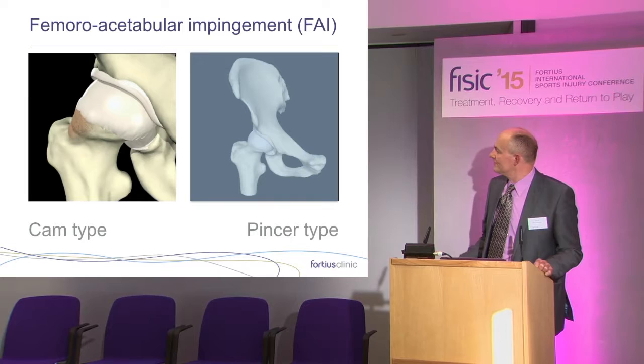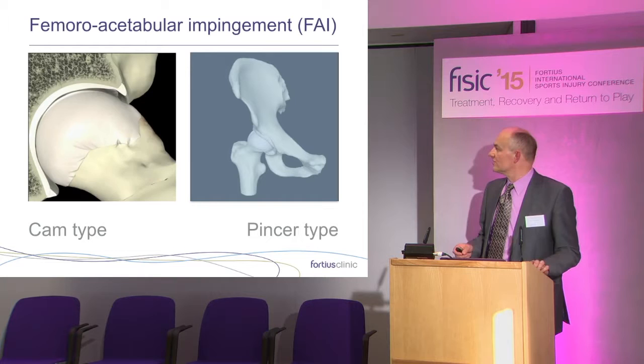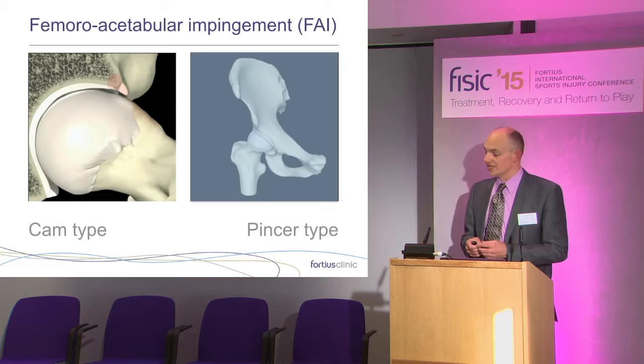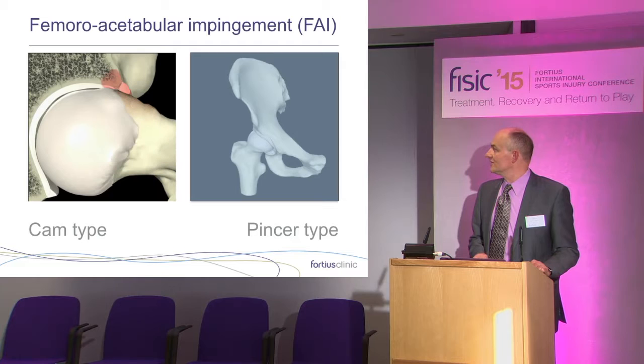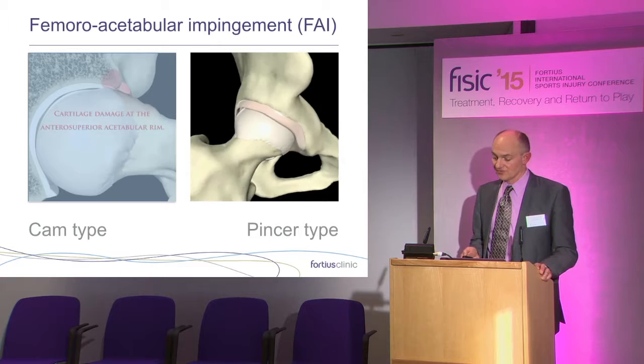CAM-type hip impingement develops because of this aspherical extension of the femoral head down the front of the head-neck junction. If you've effectively got a square peg in a round hole, as the hip flexes up you get this shearing force on the articular cartilage, and it pushes the labrum out of the way initially. So the labral injury is not such a big feature of CAM impingement, at least in the early stages. Unfortunately, the shearing of the articular cartilage predisposes to osteoarthritis of the hip, or indeed is the earliest type of osteoarthritis of the hip.